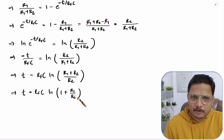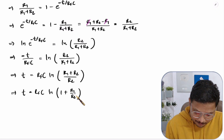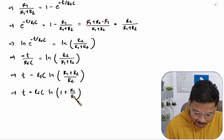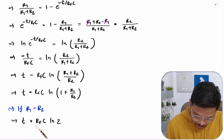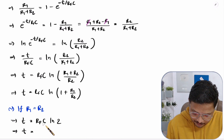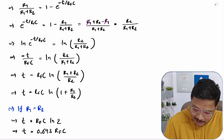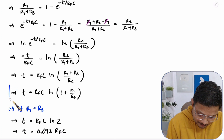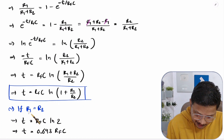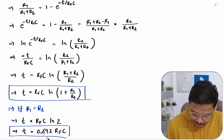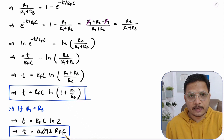Now, as a special case, if we assume R1 equals R2, then ln(1 + 1) = ln(2). So the time duration for the width of pulse becomes T = RF·C · ln 2, and since ln 2 = 0.693, the basic equation — assuming R1 = R2 — gives: width of pulse = 0.693 × RF·C.